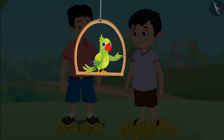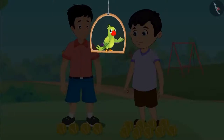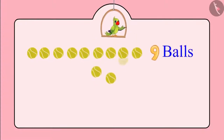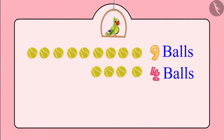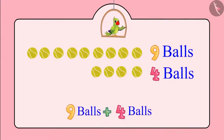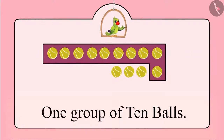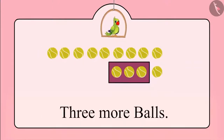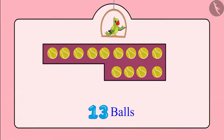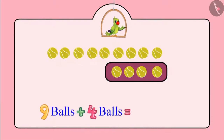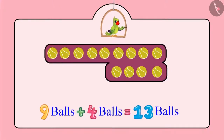Children, do you know? Chotu has 9 balls and Sonu has 4 balls. All the balls together make a group of 10 balls and 3 more balls. This means there are a total of 13 balls. 9 balls added to 4 more balls make a total of 13 balls.